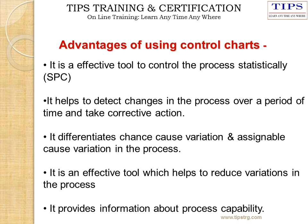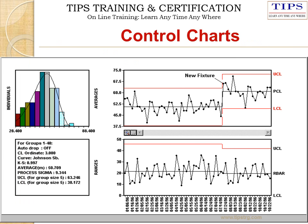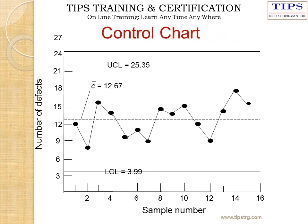Advantages of control charts: it is an effective tool to control the process statistically; it helps detect changes in the process over time and take corrective action; it differentiates chance causes of variation from assignable causes of variation; it helps reduce variation in the process; and it provides information about process capability. In the example shown, the upper and lower control limits are plotted, and all data points fall within both control limits, meaning the process is in control.